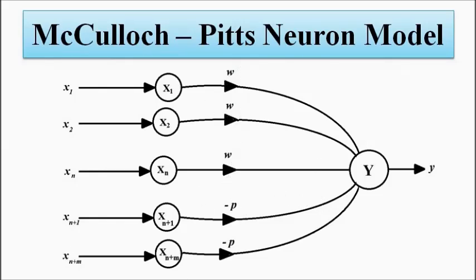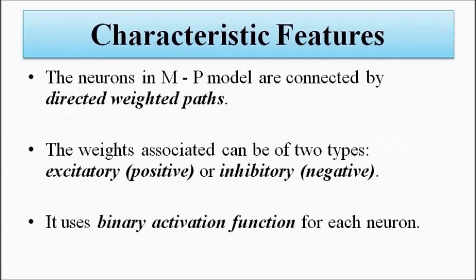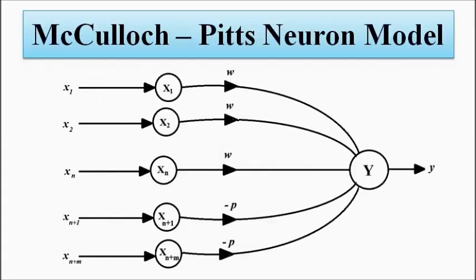The neurons have binary activation function. All the neurons associated have binary activation function. It means that the output can either be 0 or 1.